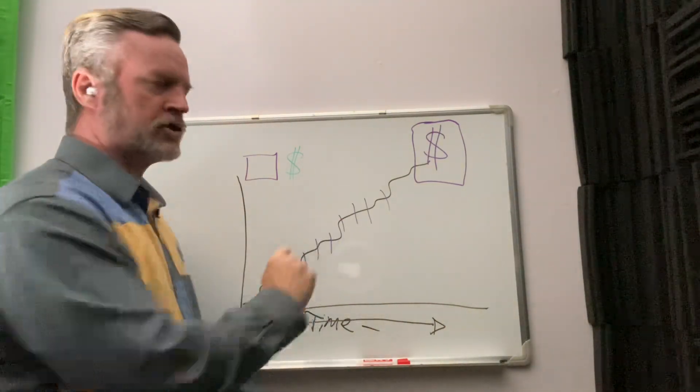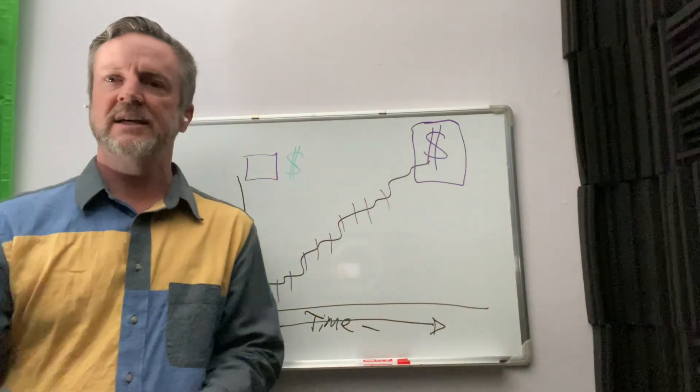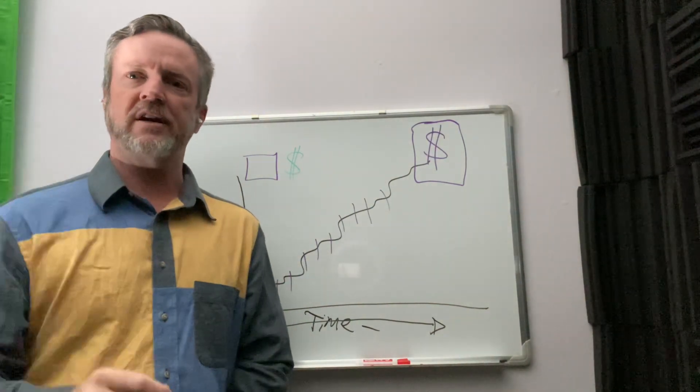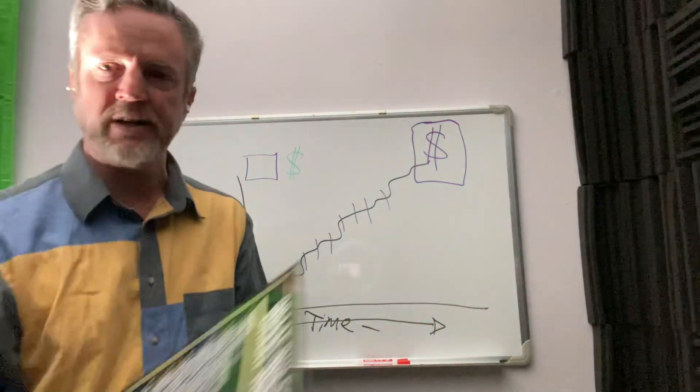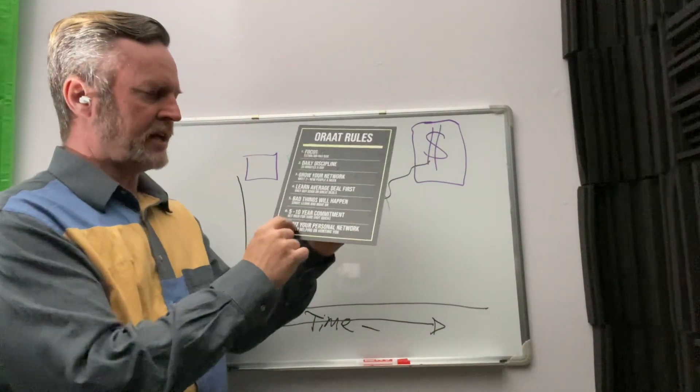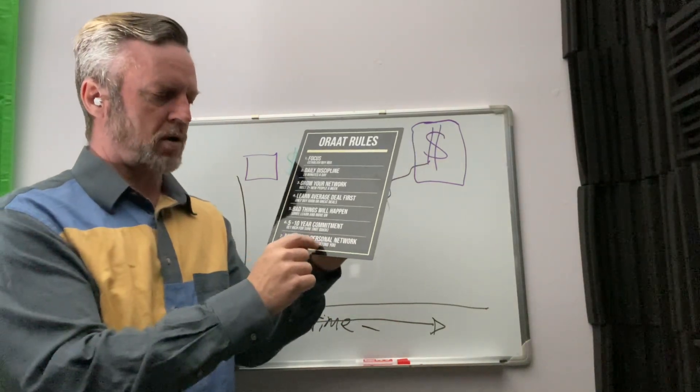But again, on this journey, there will be many twists and turns and ups and downs. Enjoy the journey. Document, share. Most importantly, as rule number seven says, audit your personal network. Are they helping or are they hurting you?